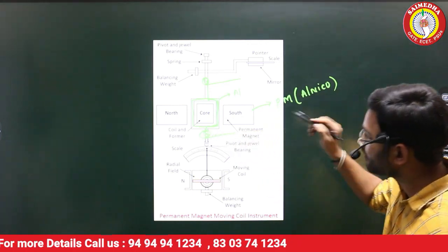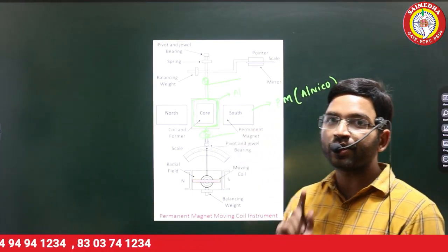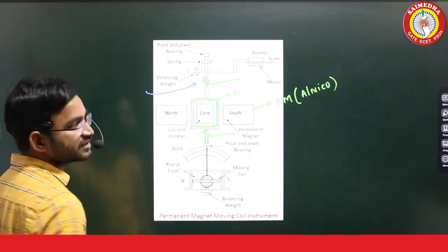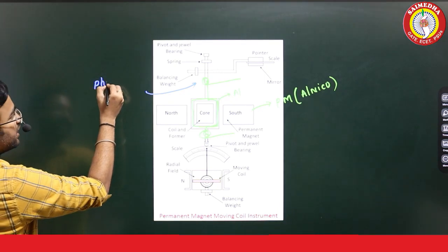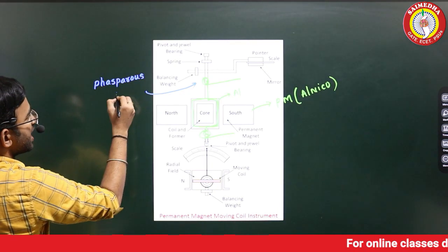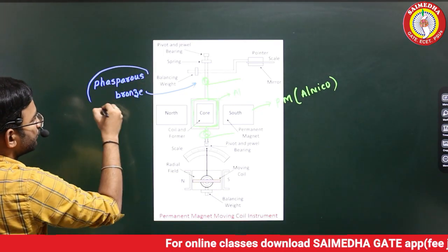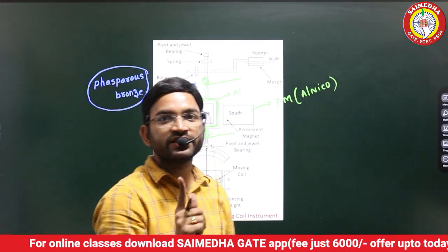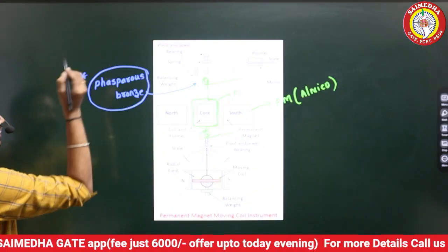The second end also connects using a spring. We use springs to make connections because we are going to carry current through the copper wire coil and need to avoid external interference effects.